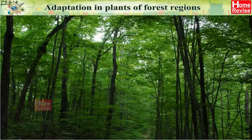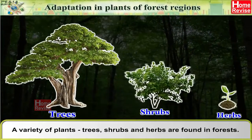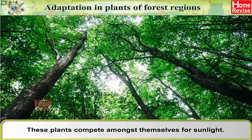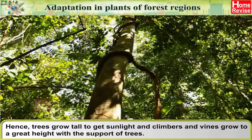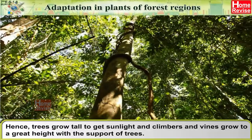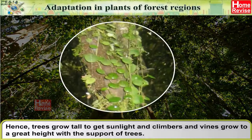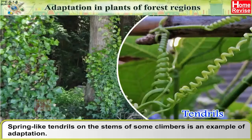Adaptation in Plants of Forest Regions: A variety of plants — trees, shrubs and herbs — are found in forests. These plants compete amongst themselves for sunlight. Hence, trees grow tall to get sunlight, and climbers and vines grow to a great height with the support of trees. Spring-like tendrils on the stems of some climbers are an example of adaptation.